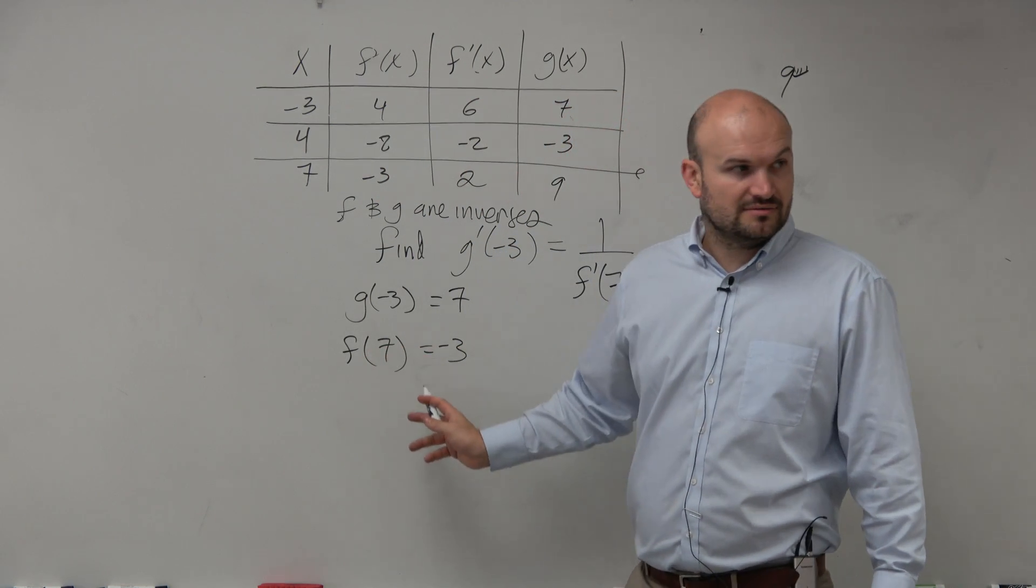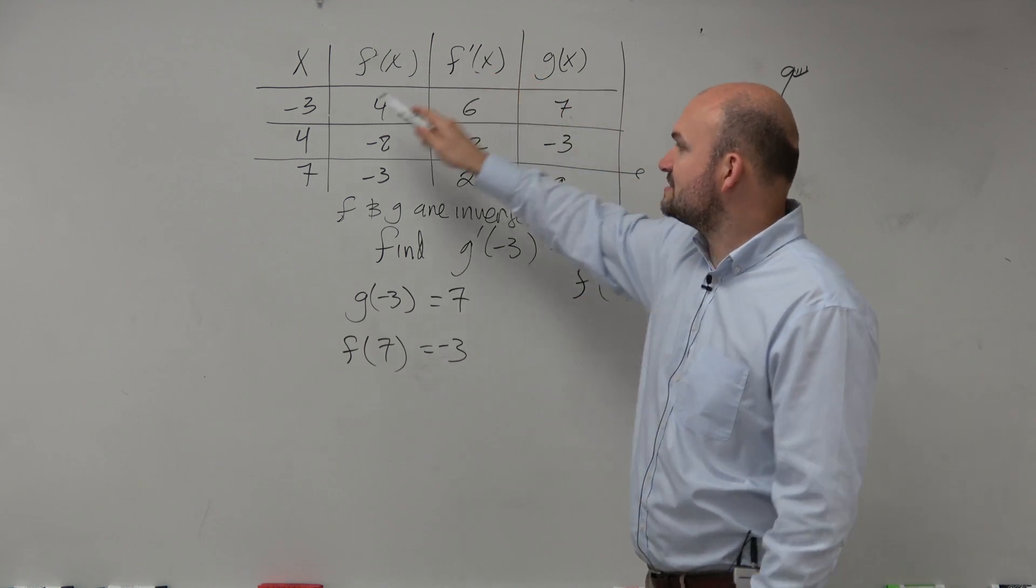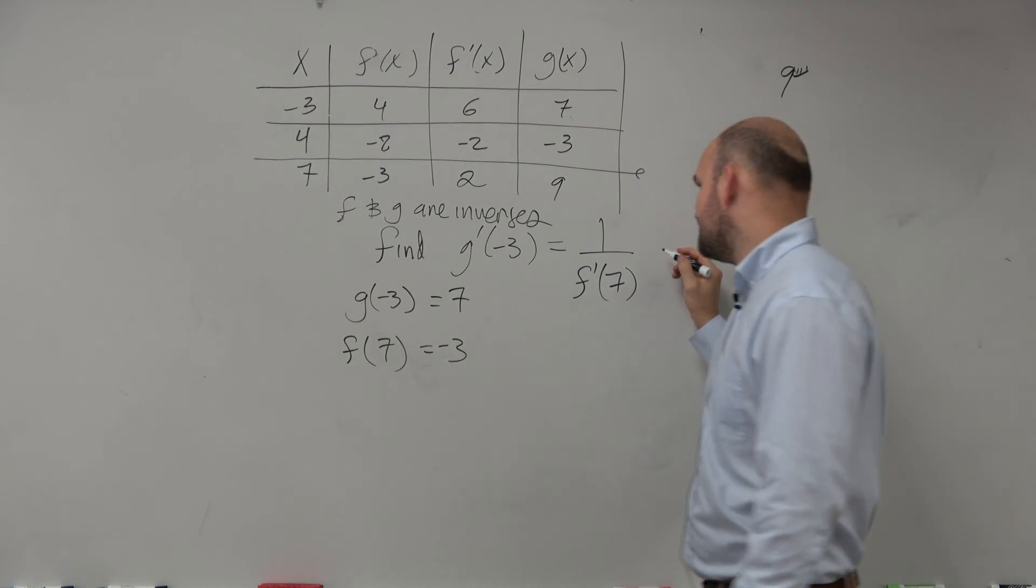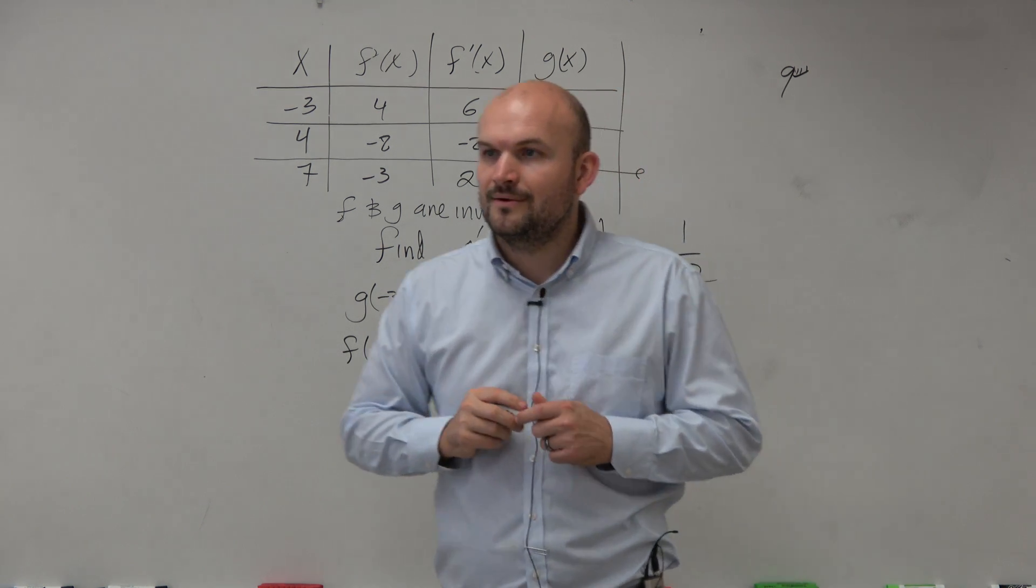So I'm not looking for f of 7, but I just wanted to do that to make sure I knew the relationships. I'm looking for f prime of 7, which is 2. So 1 half. We've got 1 half.